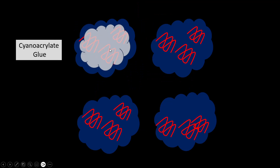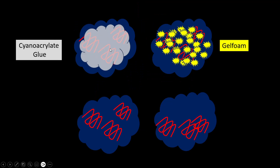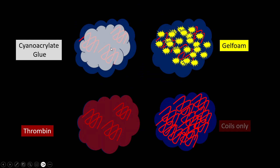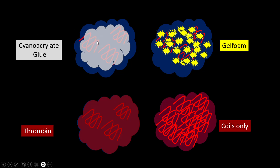We can use cyanoacrylate glue to block the varices; potentially we can use gel foam, thrombin, or just pack the whole varix with coils — and coils alone will take care of all the flow in the varix. Cyanoacrylate glue is the most commonly used agent and is what most people use in day-to-day practice.